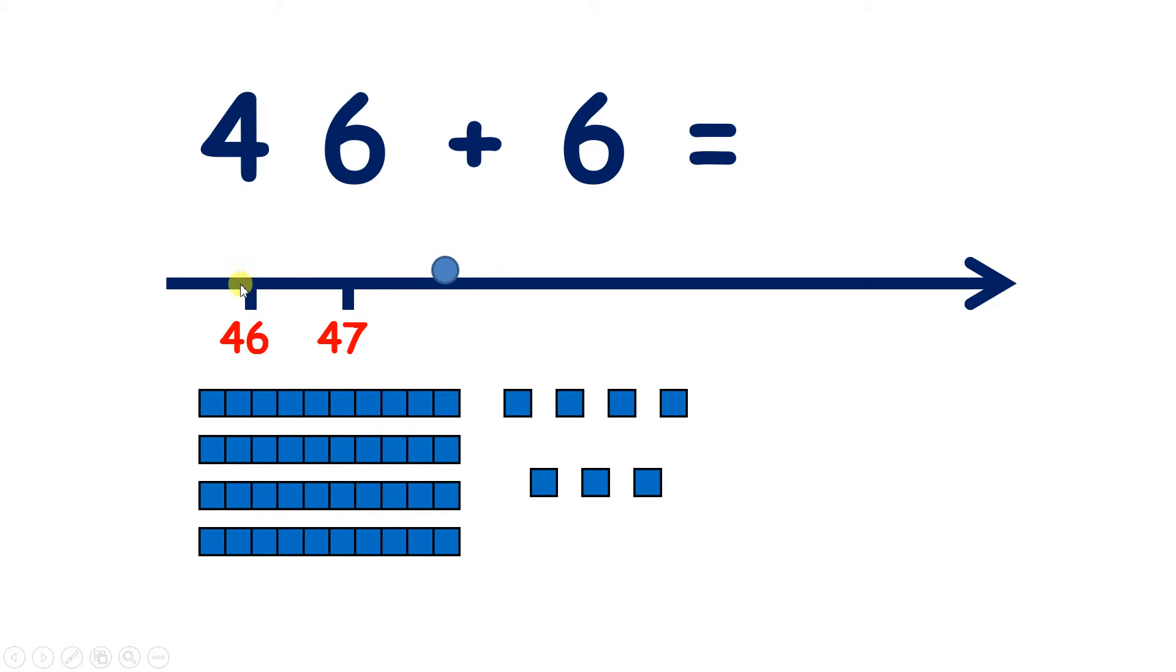Add another will mean that we've added 2. So one more unit, that's 8 units, so 48. Add another means we will have added 1, 2, 3. So that's 9 units now, 49.